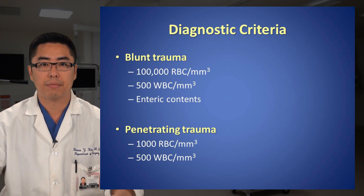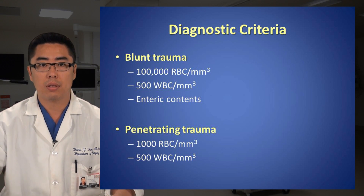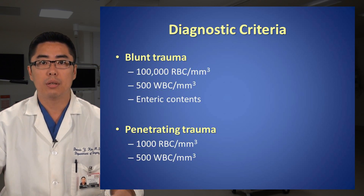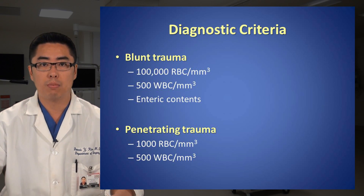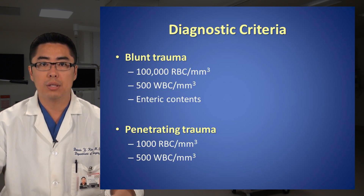Diagnostic criteria: In patients sustaining blunt trauma, the DPL may be either grossly or biochemically positive. Provided that there is no return of gross blood or enteric contents, fluid from the DPL should be sent to the lab for biochemical analysis. In the setting of blunt trauma, greater than or equal to 100,000 RBCs per mm³ or greater than 500 WBCs per mm³ define a biochemically positive DPL. In the setting of penetrating trauma, 1,000 RBCs per mm³ or 500 WBCs per mm³ are considered positive and mandate operative exploration.